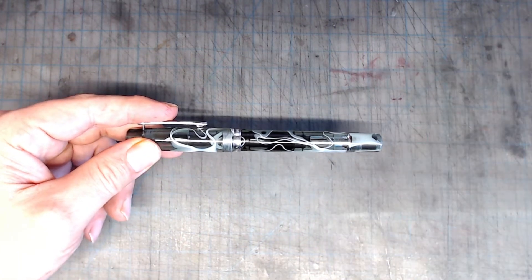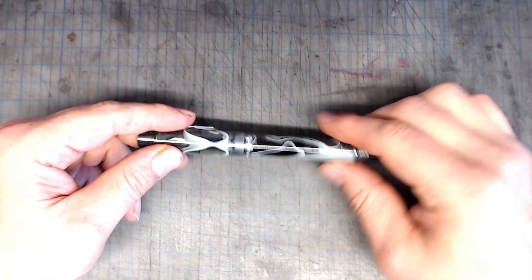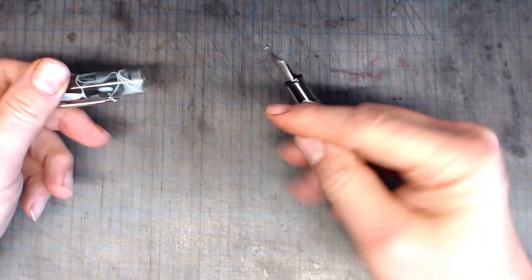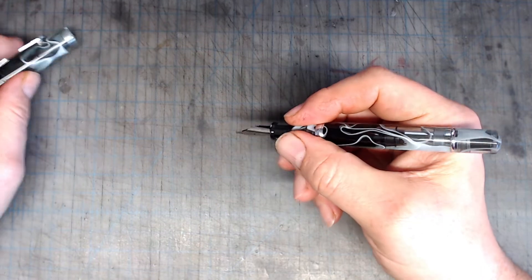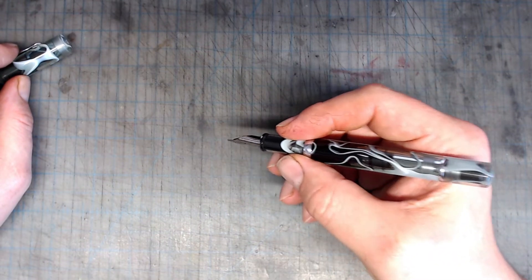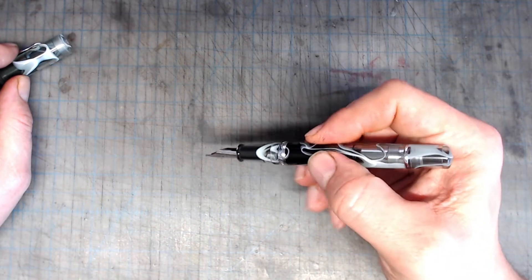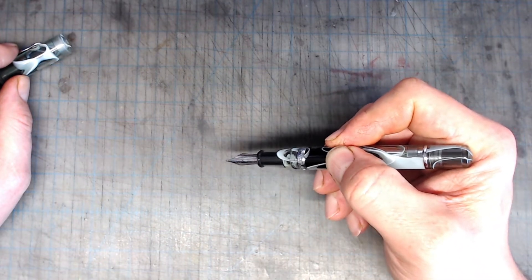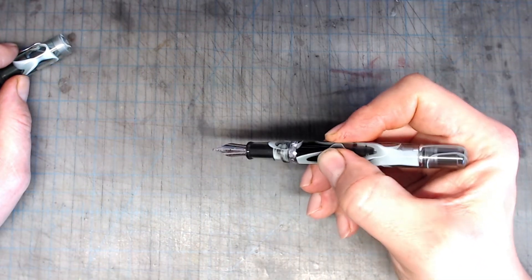Now let's talk ergonomics. The section is nice and long so your fingers don't sit on the threading, and even if they did, the threads are nice and smooth so they won't bother you. As I mention frequently in other videos, I sometimes like to sneak my fingers back on my pens, particularly when sketching, and this pen is just the right width for me to be able to do this comfortably.